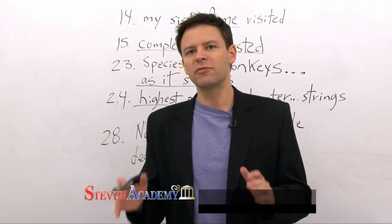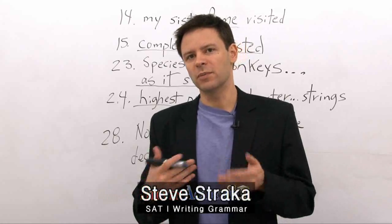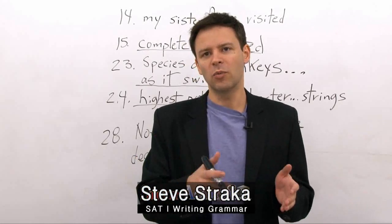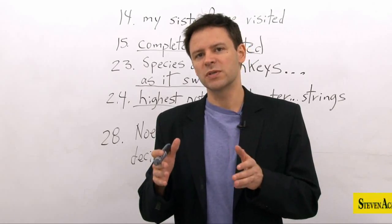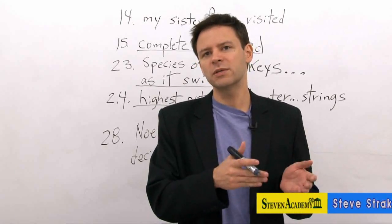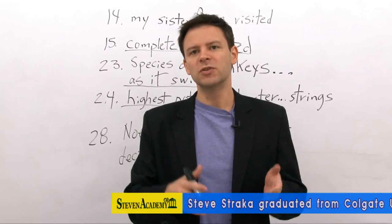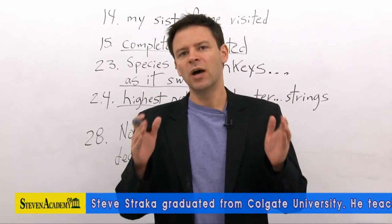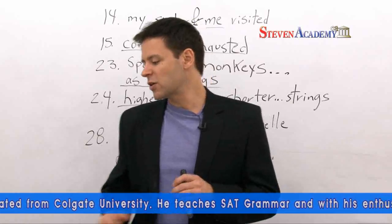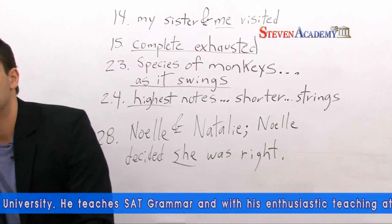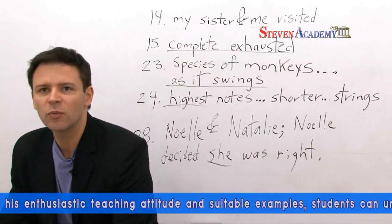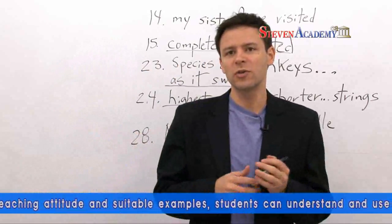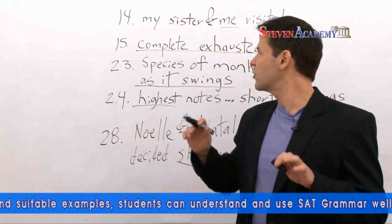Welcome back. Yesterday we focused mainly on subject-verb agreement, so today we're going to go over our homework, see how well you did on it, and then continue with issues with verbs. We'll take a quick look at parallelism, or parallel structure, and then move into everything we need to know about verb tense for the SAT. Let's get started by going over your homework. Get out your Princeton Review book and let's start with the homework on pages 430 and 431.